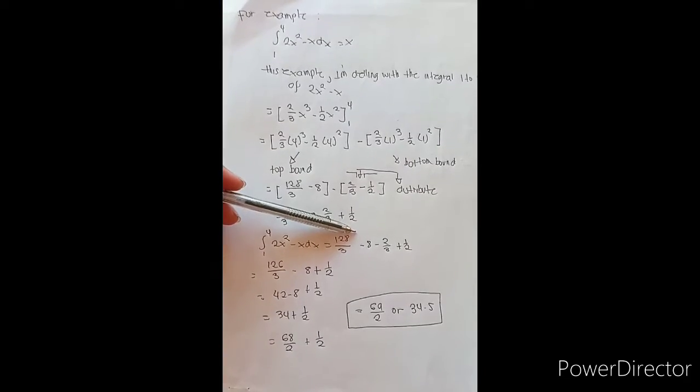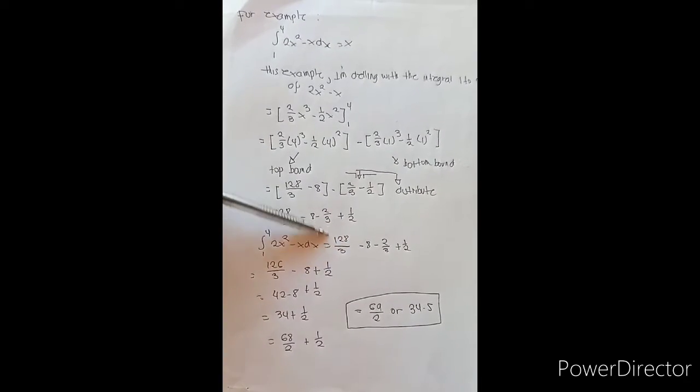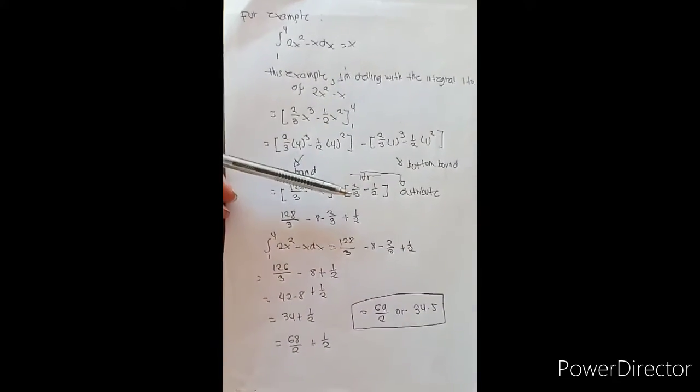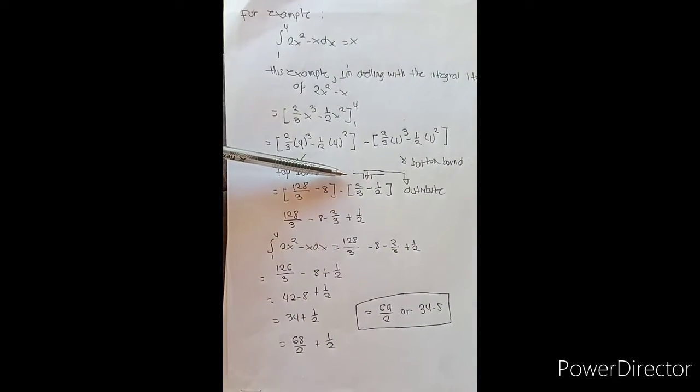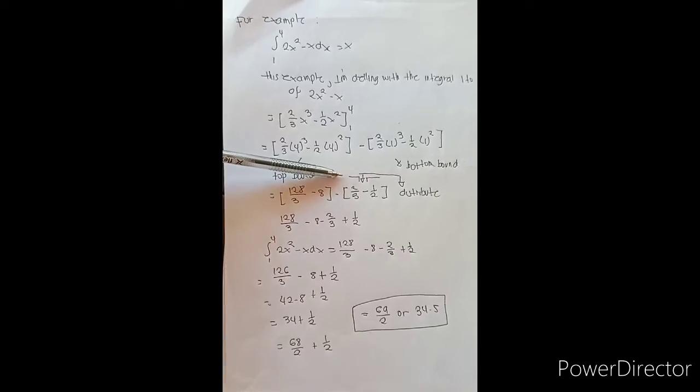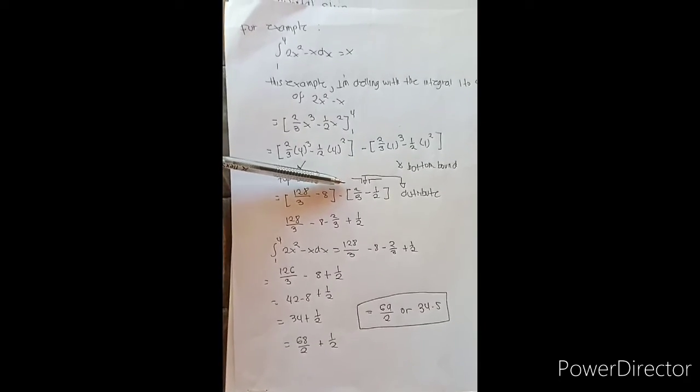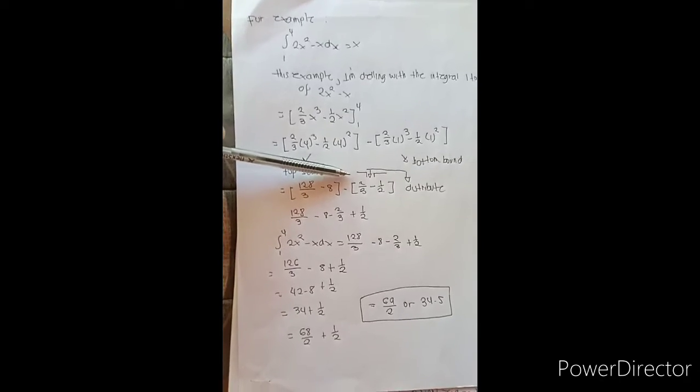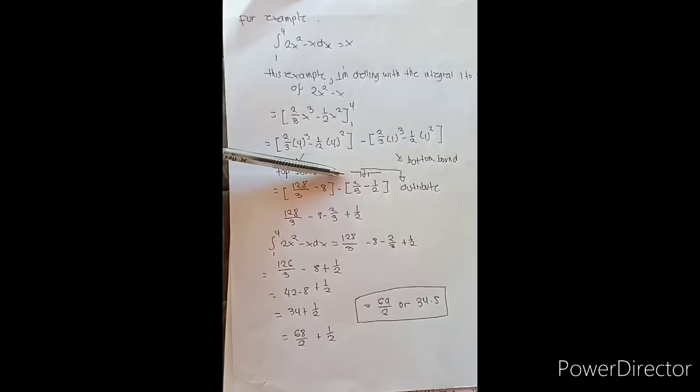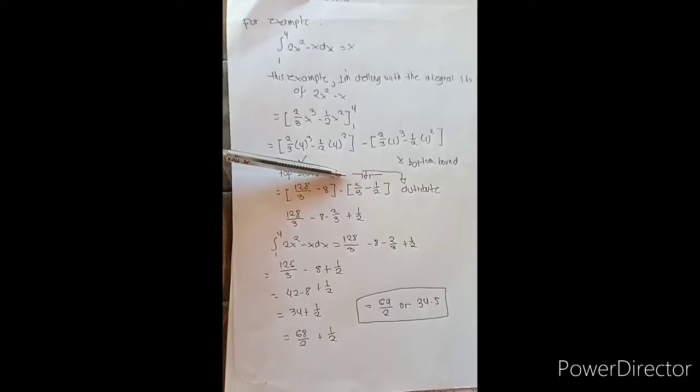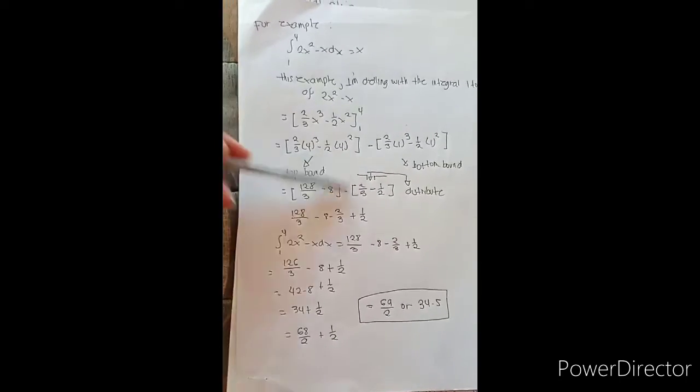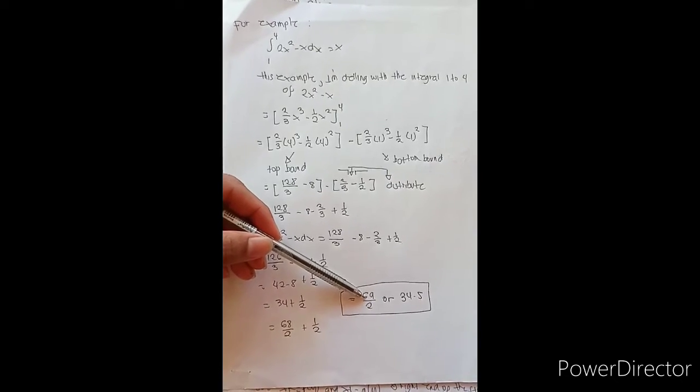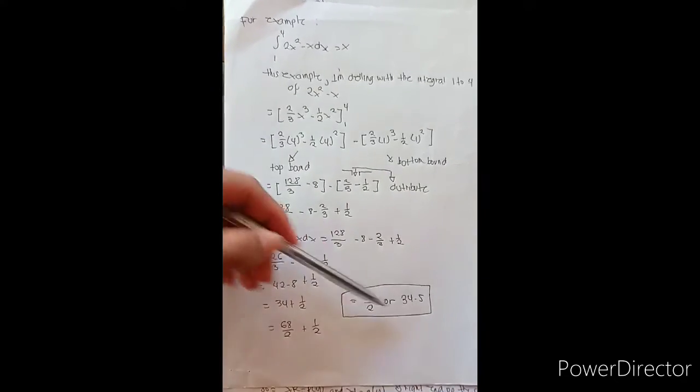So we need to simplify this so it will become 126/3 - 8 + 1/2, which is equal to 42 - 8 + 1/2, and equal to 34 + 1/2. Converting to the same denominator: 68/2 + 1/2, so it will become 69/2.